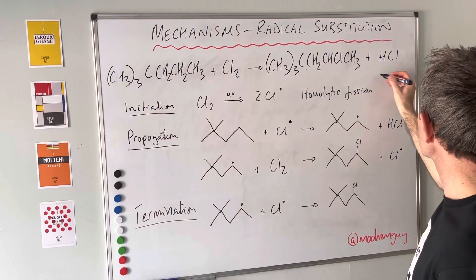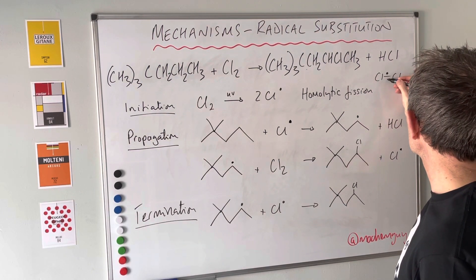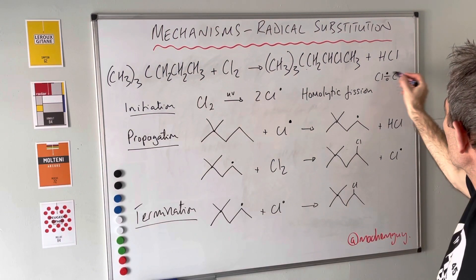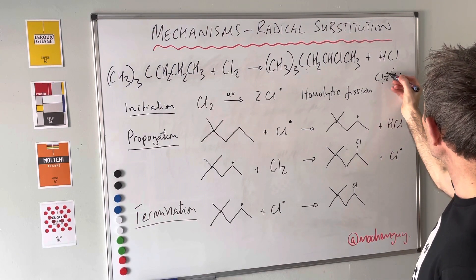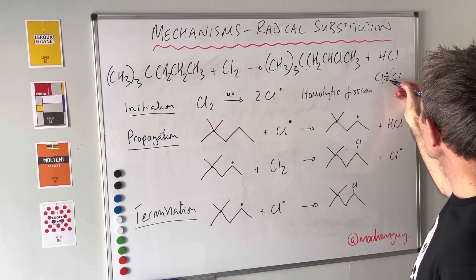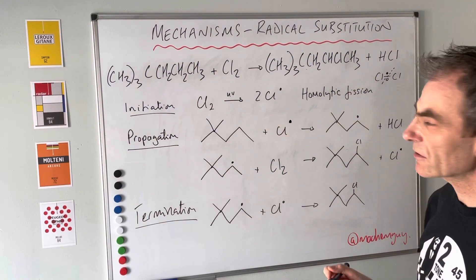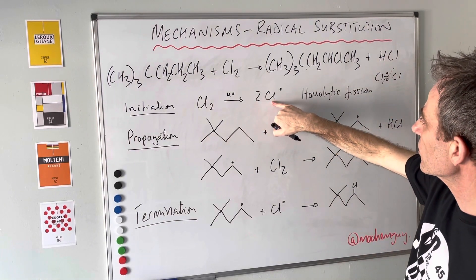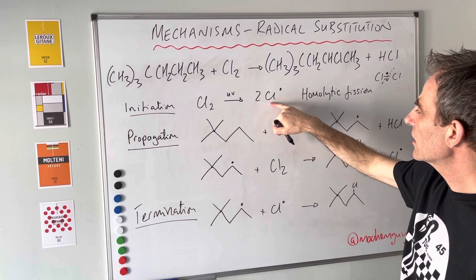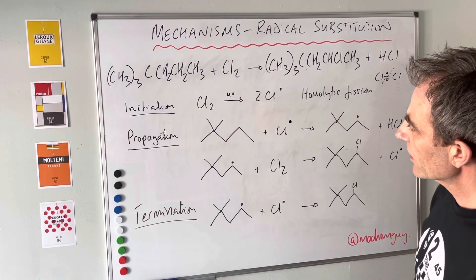...right down the middle. Here's Cl-Cl, with the bond joining the two chlorine atoms together. It's broken down the middle so each chlorine atom receives a single electron from the broken bond. That's homolytic fission, and it generates these two very reactive species, these two free radicals.